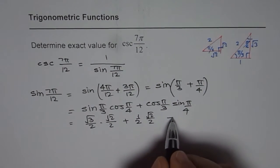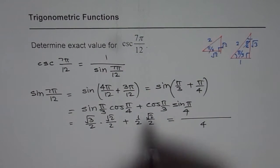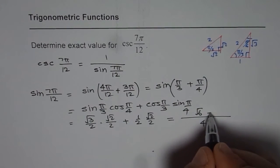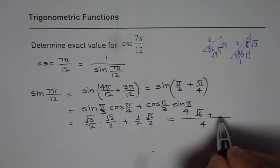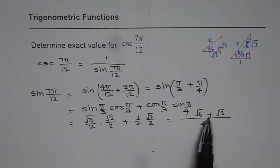So we can now combine these terms. Common denominator for us is 4. Here we get square root 6 plus square root 2. Now sine 7 pi by 12 is square root 6 plus square root 2 divided by 4.